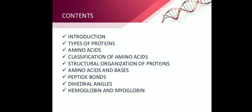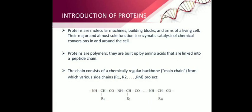Proteins are the most abundant organic molecules of living systems. They occur in every part of the cell and constitute approximately 50 percent of the cellular dry weight. These proteins are also known as molecular machines, as well as the building blocks and arms of living cells.